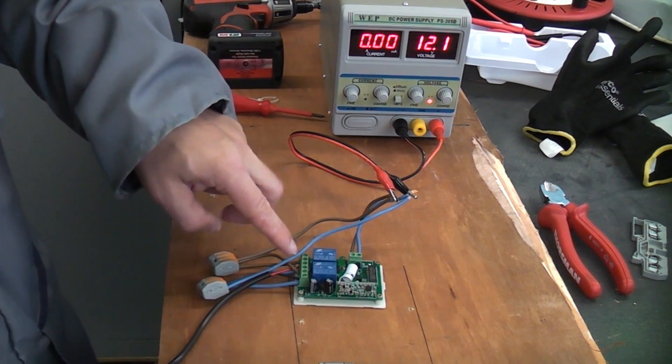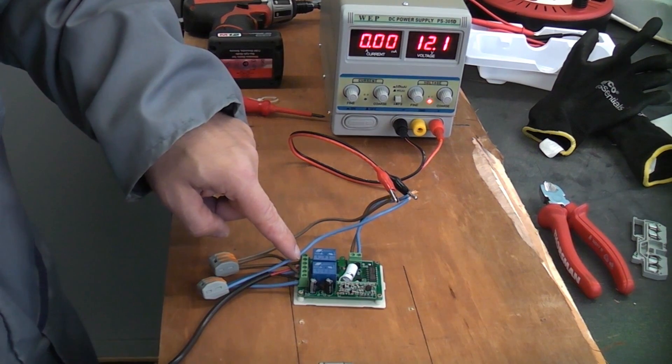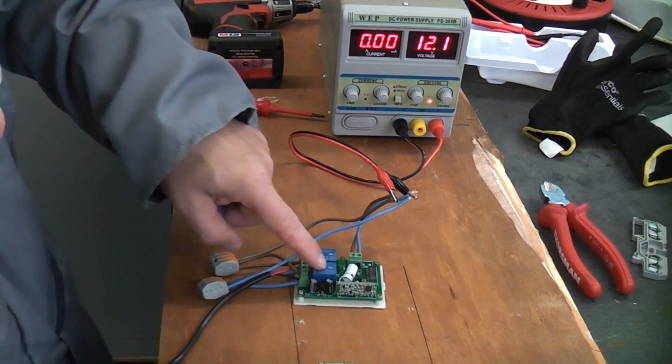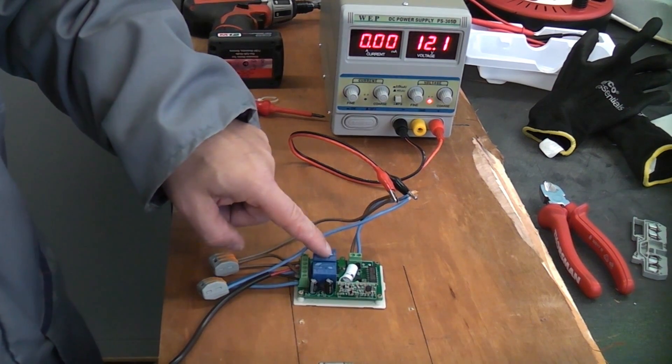We have normally open, normally closed and a common in between, and we have two sets of those. Each one of those is controlled by one of these relays.